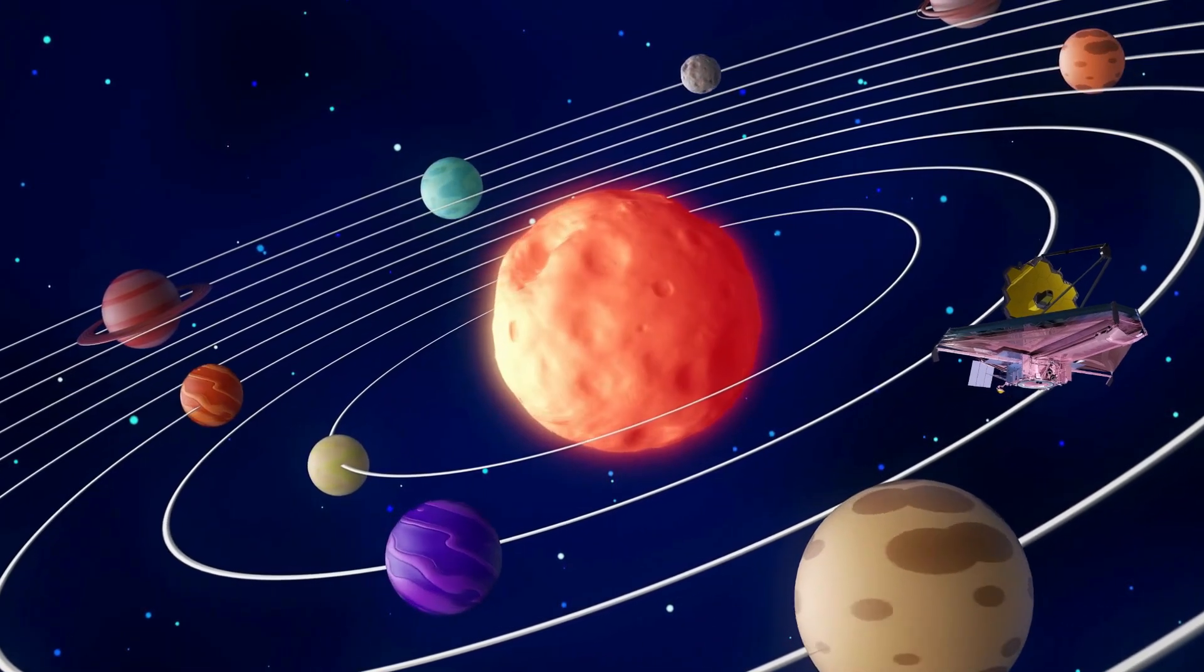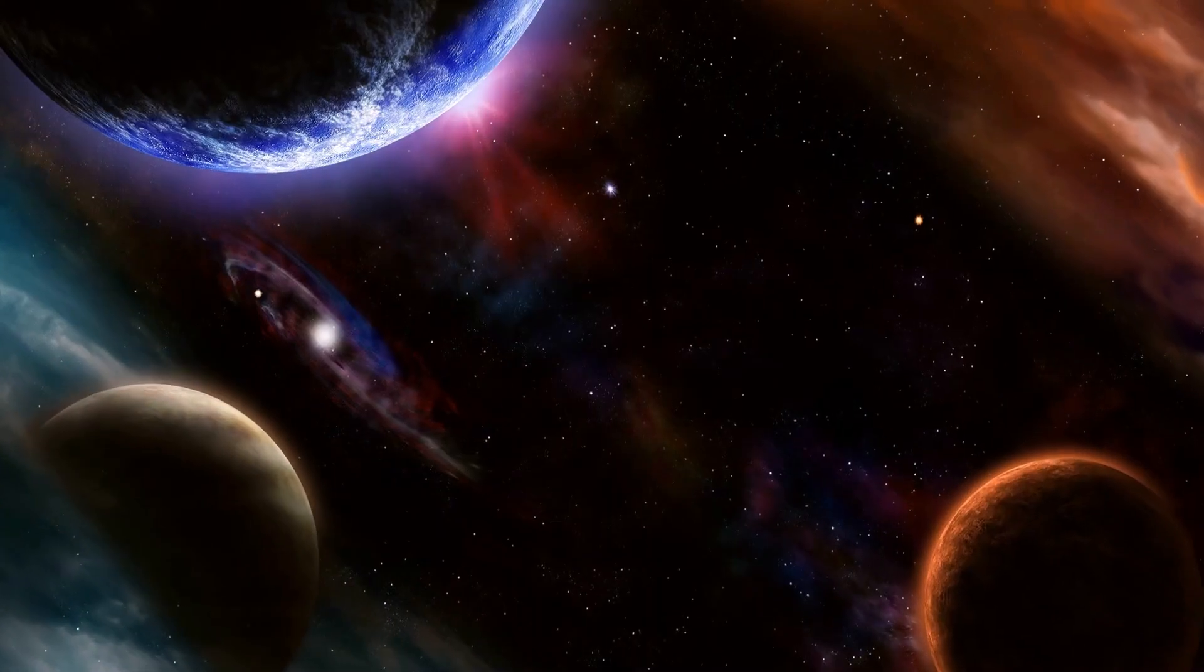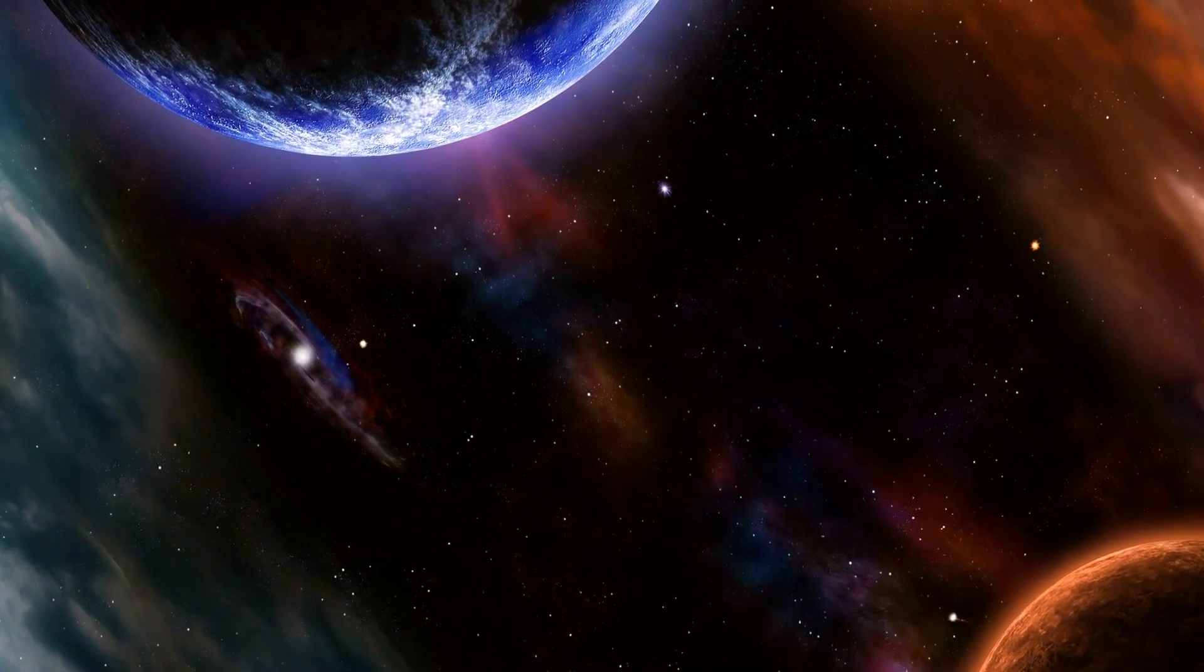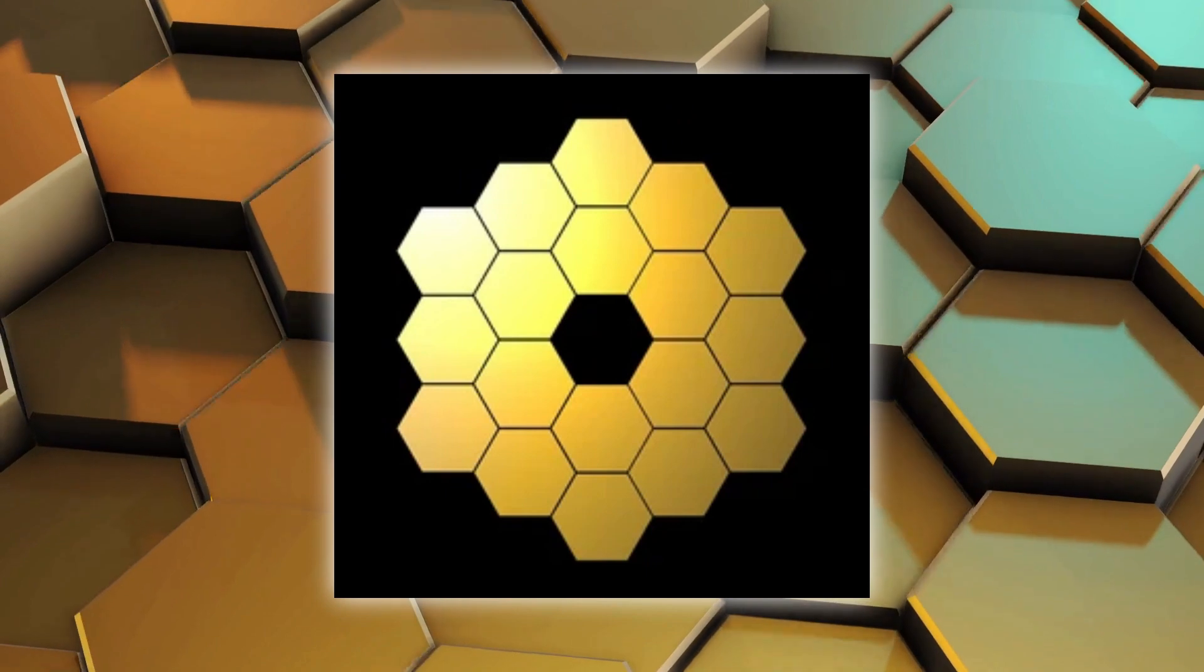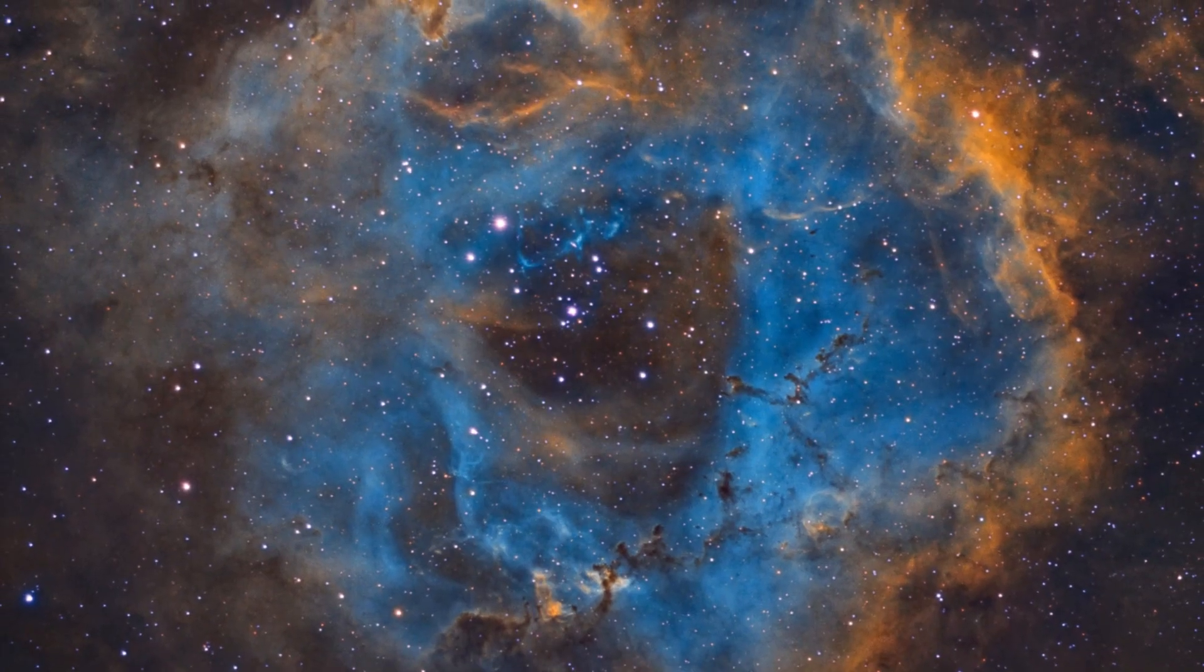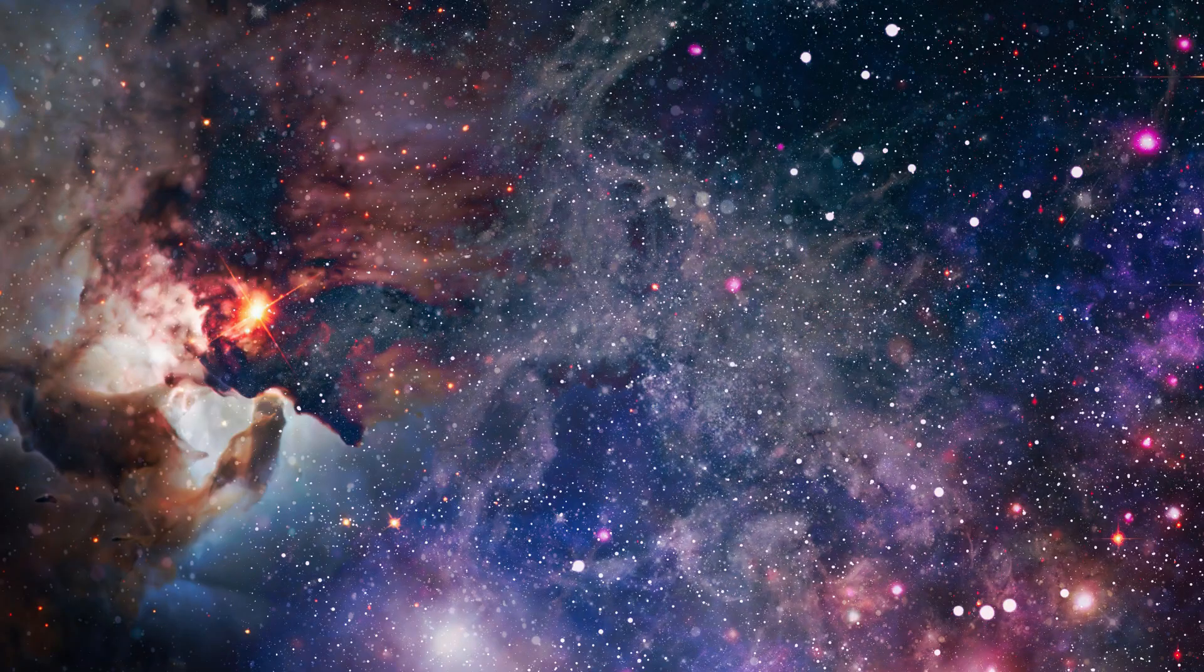JWST's orbit around the sun, 1.5 million kilometers from Earth, provides an unobstructed view of the universe in infrared light. Protected by its massive gold-coated primary mirror and an expansive sun shield, JWST delivers unprecedented infrared views that were once only a dream.